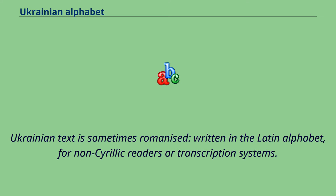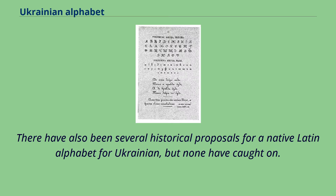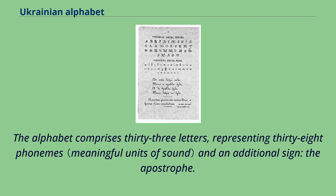Ukrainian text is sometimes romanized — written in the Latin alphabet — for non-Cyrillic readers or transcription systems. See romanization of Ukrainian for details on specific romanization systems. There have also been several historical proposals for a native Latin alphabet for Ukrainian, but none have caught on. The alphabet comprises 33 letters representing 38 phonemes and an additional sign: the apostrophe.